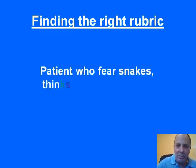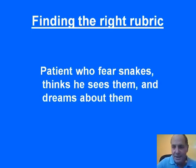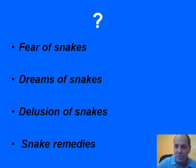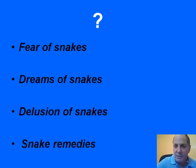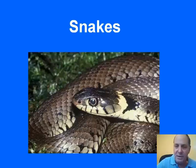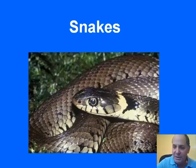Let's take another example — a patient who fears snakes, thinks that he sees snakes, and dreams about snakes. What will we take here? Fear of snakes, dreams of snakes, delusions of snakes — all those are possible. What about all the snake remedies themselves? They might be part of it, and there are many other snake rubrics in the repertory. Instead, I created one big rubric called Snakes that contains anything to do with snakes, including the snake remedies, and even in a very low experimental degree, plant remedies that relate to snakes or have snake in their name, just in case.